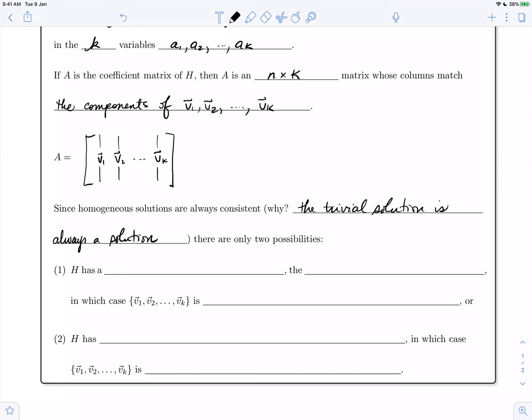Then there are only two possibilities for the number of solutions. H, a homogeneous system, has potentially a unique solution, which of course would be the trivial solution.